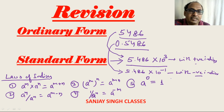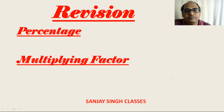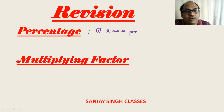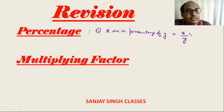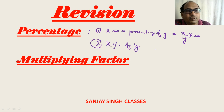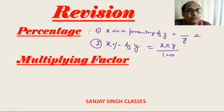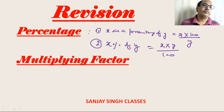In percentage we used two formulas. The first one is X as a percentage of Y, which equals X/Y × 100. The second formula is X percent of Y, which equals X × Y/100. For example, 20 as a percentage of 50 is 20/50 × 100 = 40%. And 20 percent of 50 is 20 × 50/100 = 10.